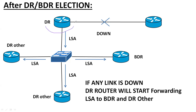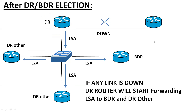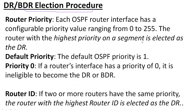The solution to this problem is the election of a DR — Designated Router — which will be responsible for forwarding LSA packets throughout the network. The DR will be the only router allowed to forward LSAs to other routers. There is a complete process behind the selection of DR and BDR, which will be automatically selected by the routers in OSPF.